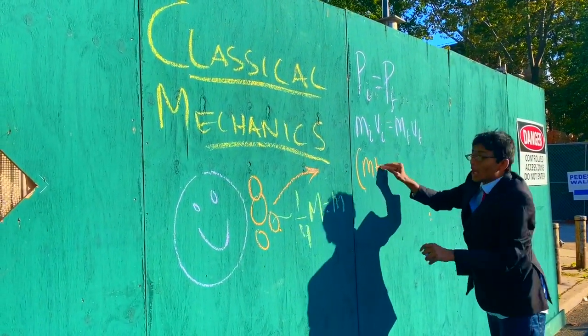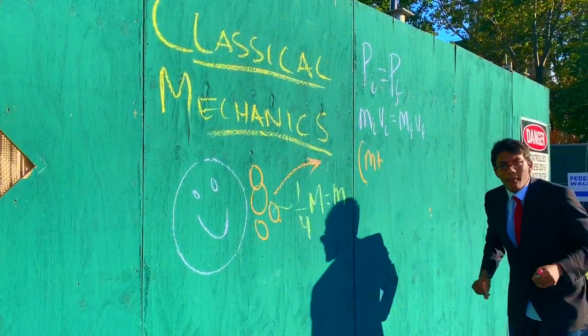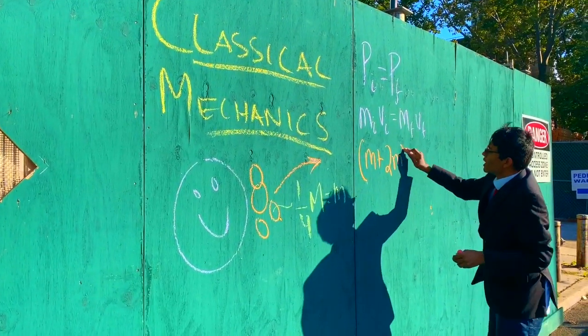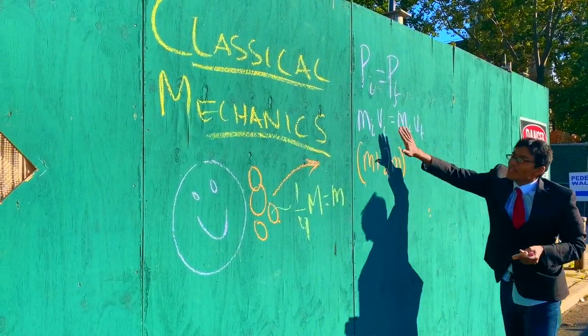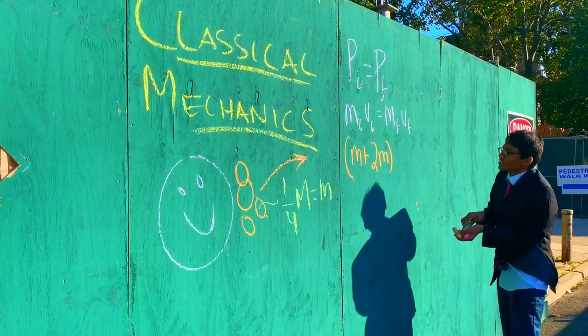The mass of the astronaut is going to be her mass plus the mass of all the rocks combined. Remember that each of the rocks are one-fourth of the mass of the actual astronaut. So if I plug that in I'm left with m plus 2m.